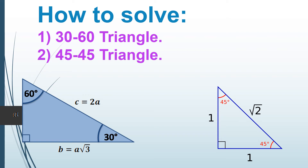Hello everyone, today I'm going to be explaining how to solve 30-60 triangles and 45-45 triangles. A 30-60 triangle is a right triangle, and so is a 45-45. To solve a triangle means to find the value of the unknown — the measure of the unknown angle and the length of the unknown side.